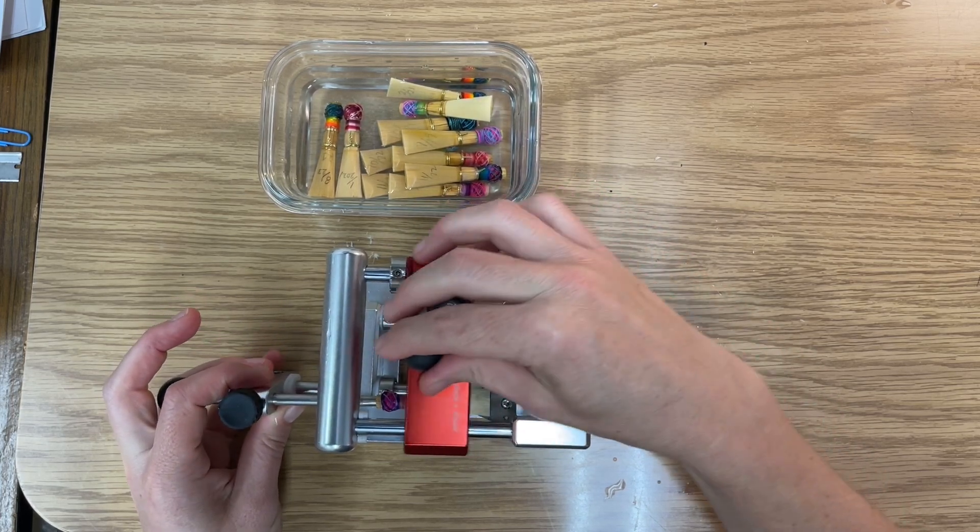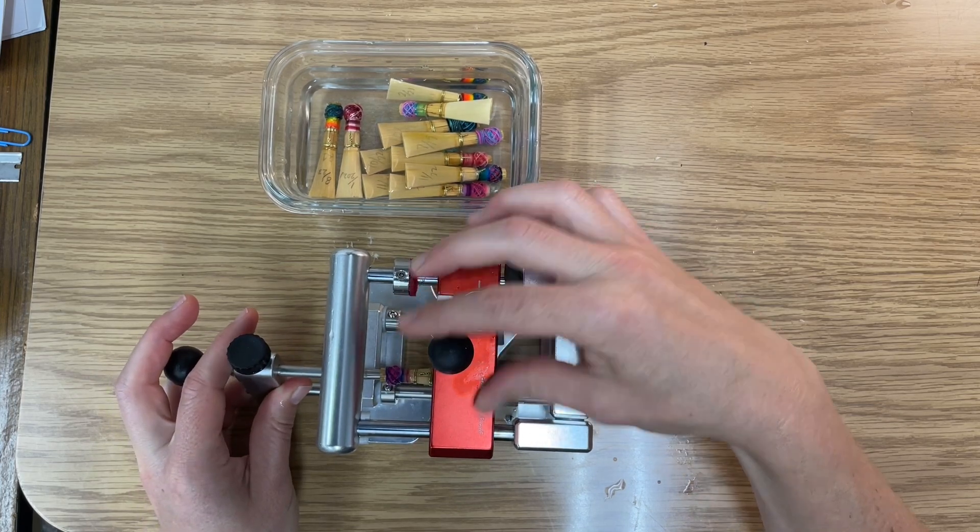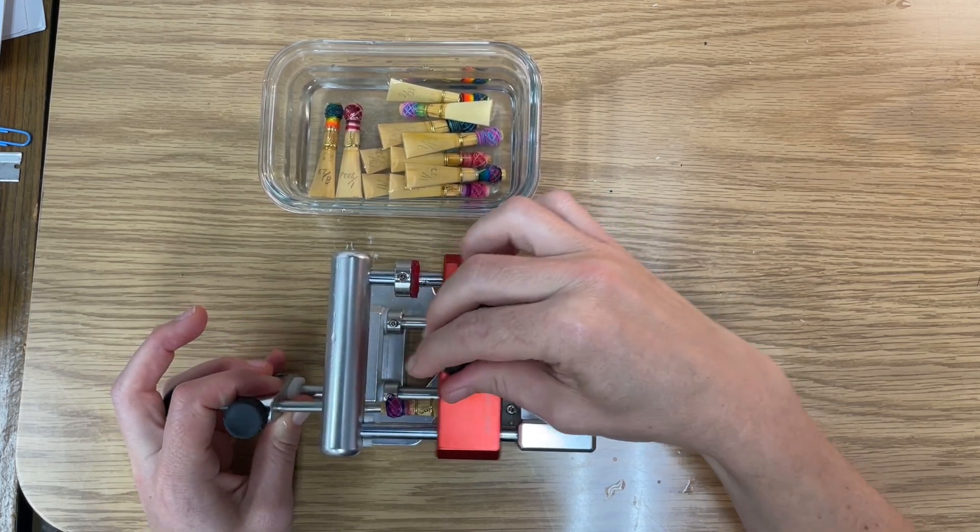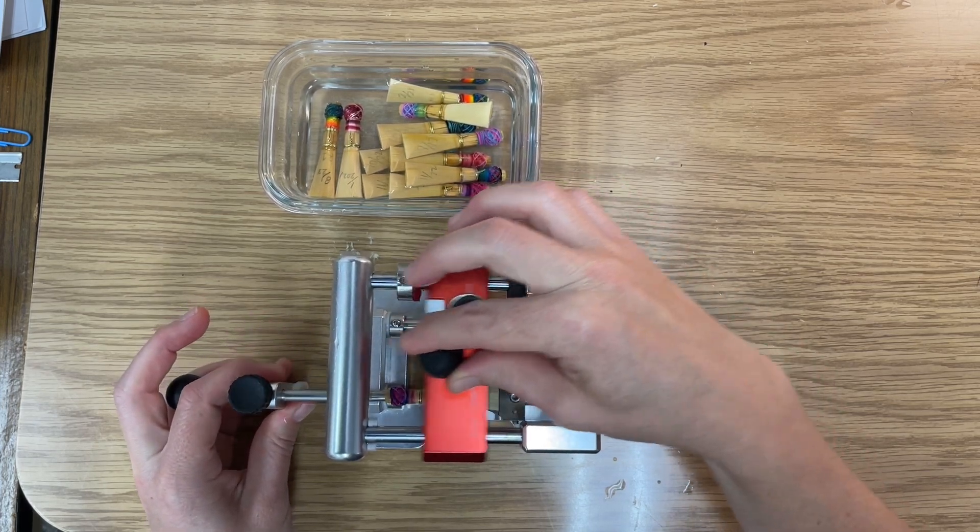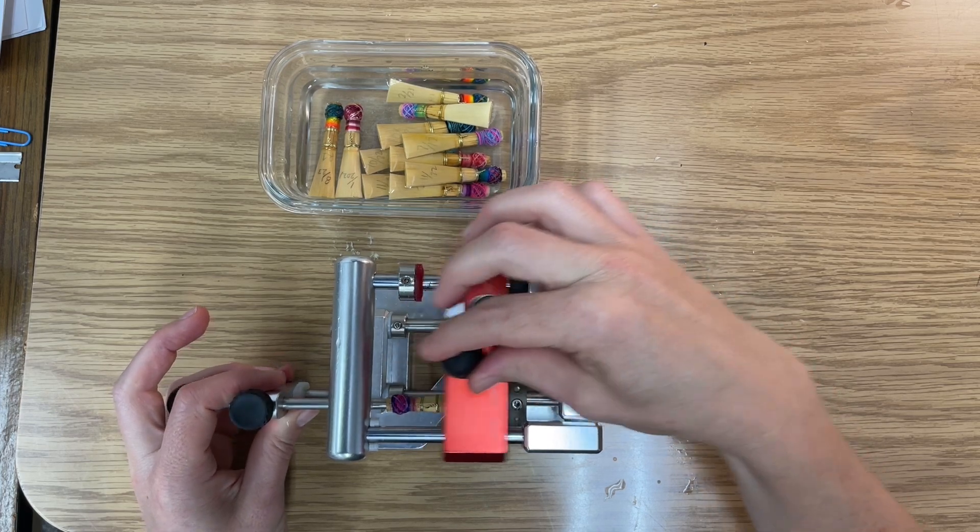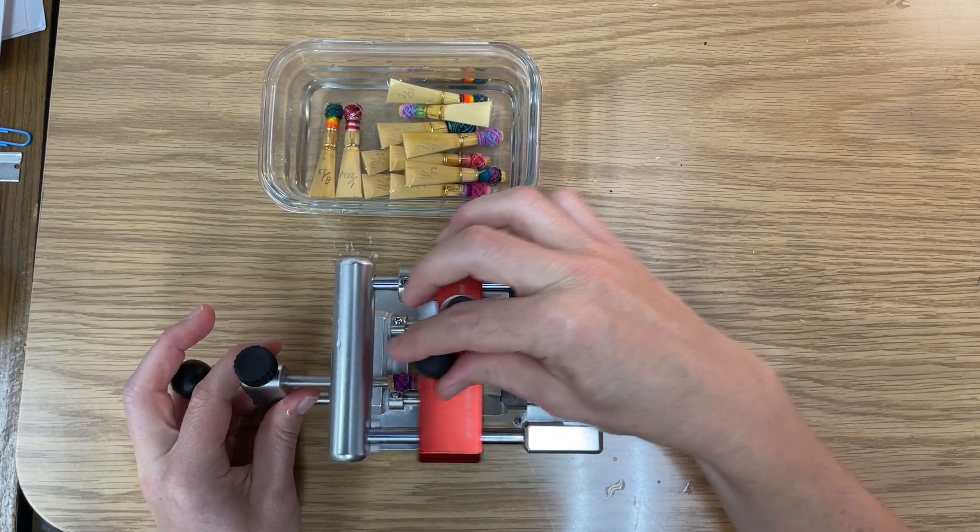If I had it all the way down it would take off too big of a chunk and it would tear the cane, but this is designed to take off just a little bit at a time. Looks like this profile is on the thinner side, so it's not taking much off. It just started taking a little bit off.